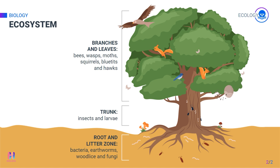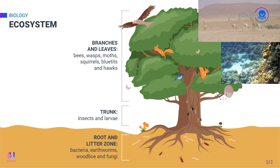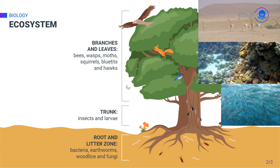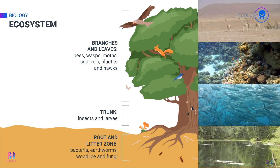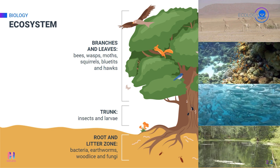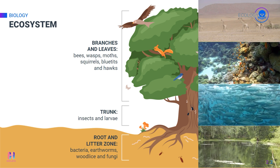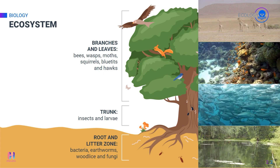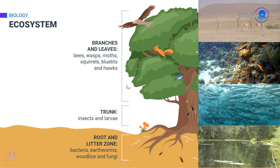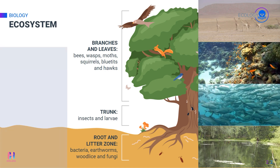But some ecosystems are very large too. For example, an entire sea is considered an ecosystem. Other examples of ecosystems include a desert, a coral reef, and a garden pond.